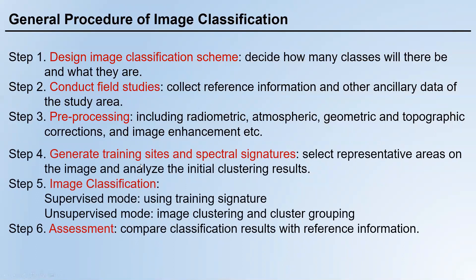Step four is to generate training sites and spectral signatures. This step is exclusive to supervised classification — unsupervised classification doesn't need training sites. You select representative areas on the image and analyze the initial clustering results. To let the software differentiate vegetation from water, you collect training sites for vegetation and for water and tell the software which sample corresponds to which class.